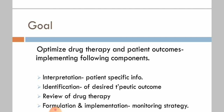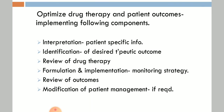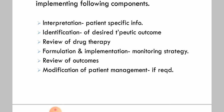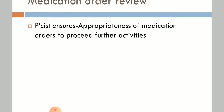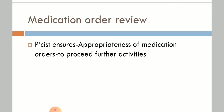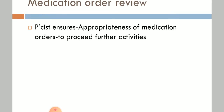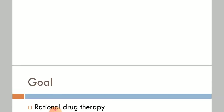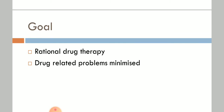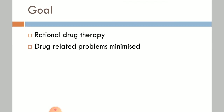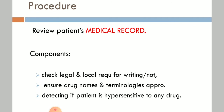The components implemented include identification, review, formulation, and implementation, followed by review of outcomes and modification of patient management if required. In the medication order review, the pharmacist ensures the appropriateness of the medication order. The goal of medication order review is rational drug therapy and minimizing drug-related problems.